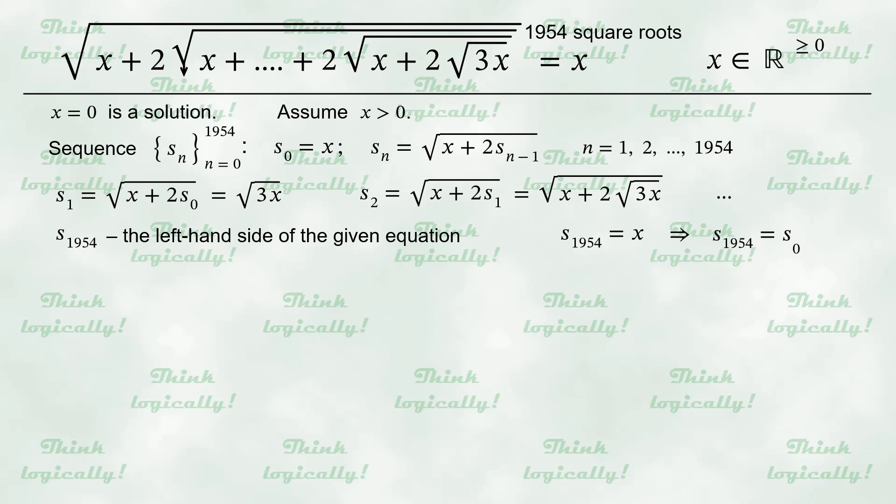Take the difference of two consecutive elements of the sequence. S sub n plus 1 minus S sub n. Applying the recursion formula to both terms, we get a difference of two square roots.